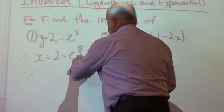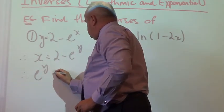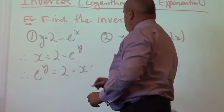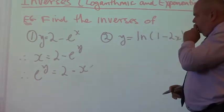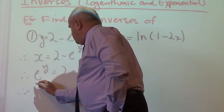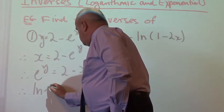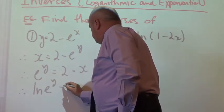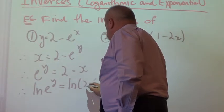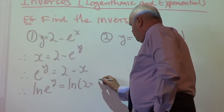So let's get the e to the y over here. So it's e to the y equals 2 minus x. And now all I need to do is take logs of both sides. Therefore, ln e to the y equals ln 2 minus x.